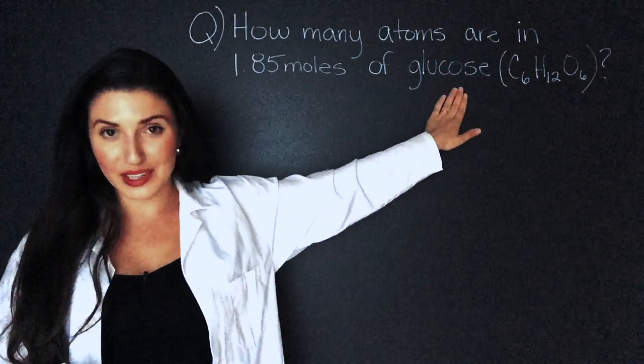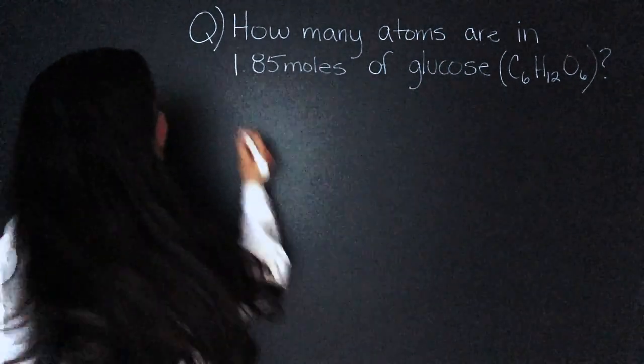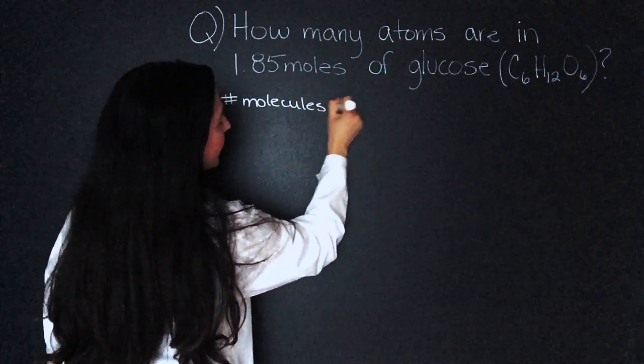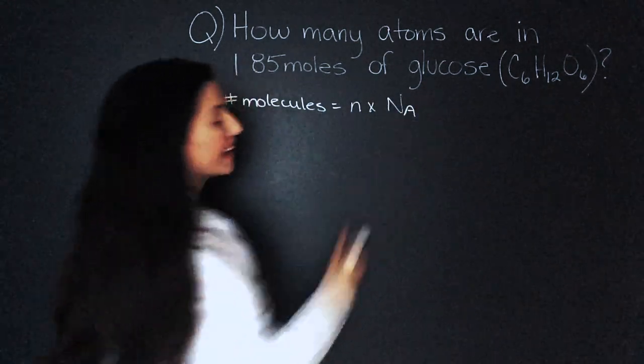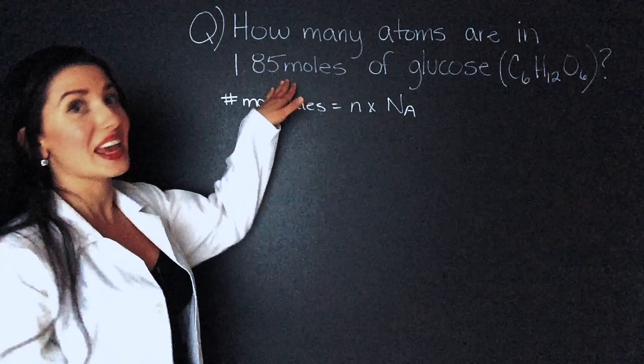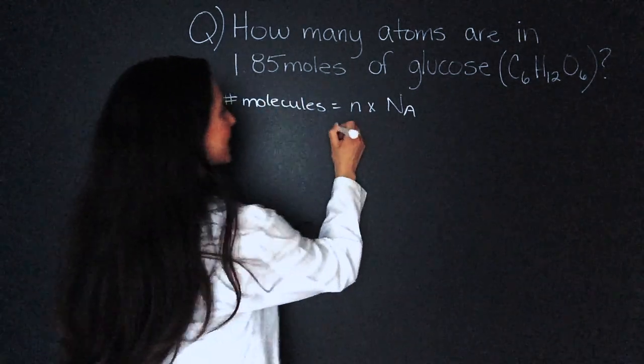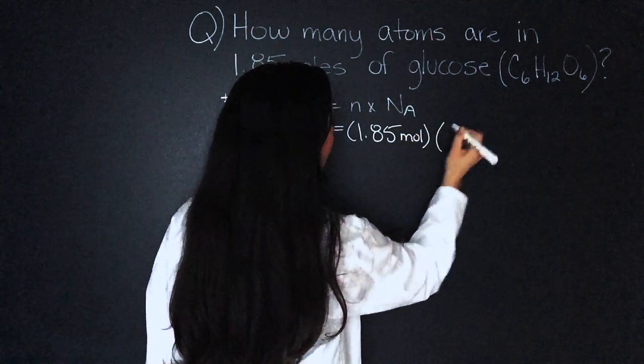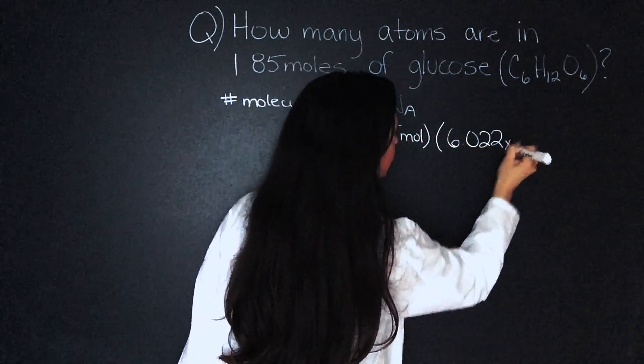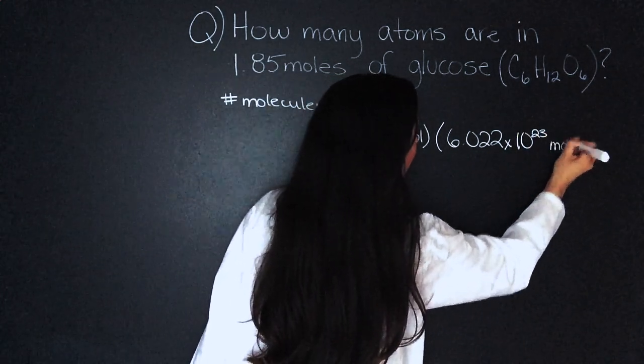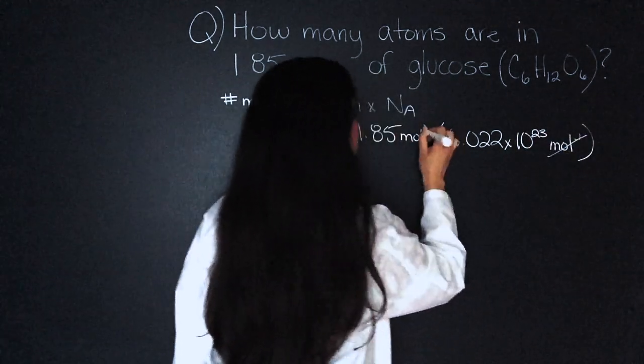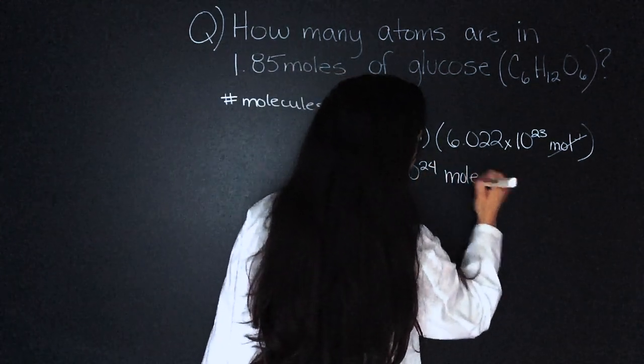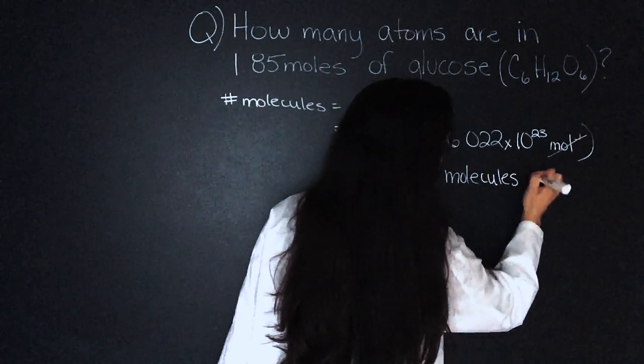First we'll find out how many molecules of glucose are in this sample. Number of molecules equals moles times Avogadro's number. Now they gave us an easy way out because they gave us the moles. So all we do is plug it in. 1.85 moles times Avogadro's number 6.022 times 10 to the 23 mole to the negative one. Units cancel out. 1.11 times 10 to the 24 molecules of glucose.